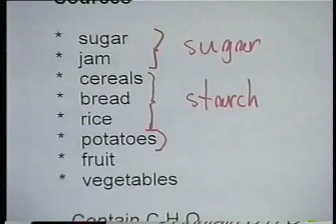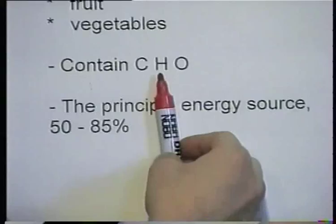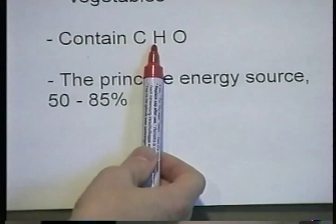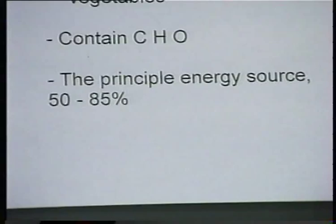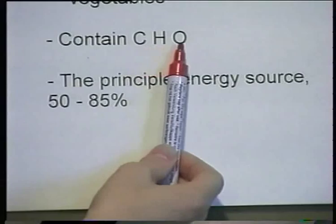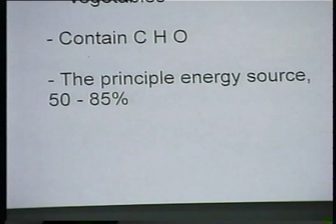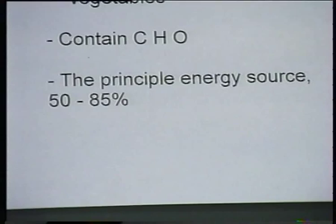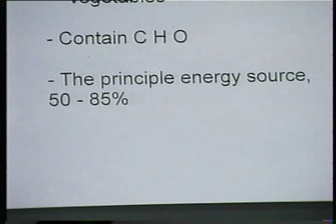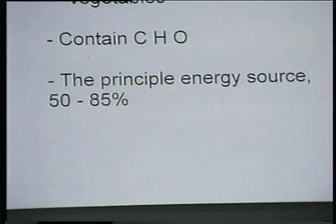The reason carbohydrates are so called is because they contain three components: carbon, hydrogen, and oxygen — carbo-hydrate. It's important to note that carbohydrates are energy foods. They are the principal source of energy in most diets. We get energy from fats as well, but the principal energy source in the diet should be carbohydrate.